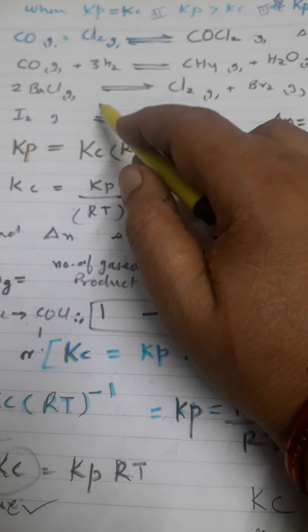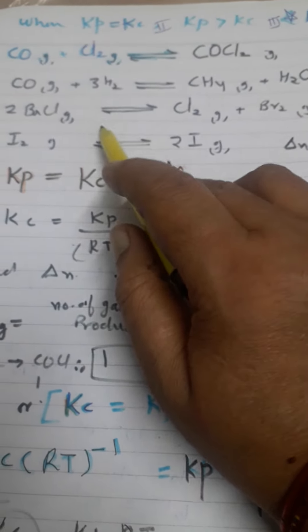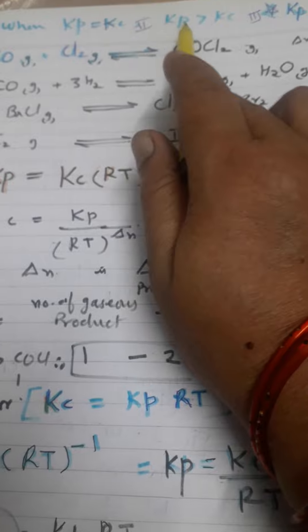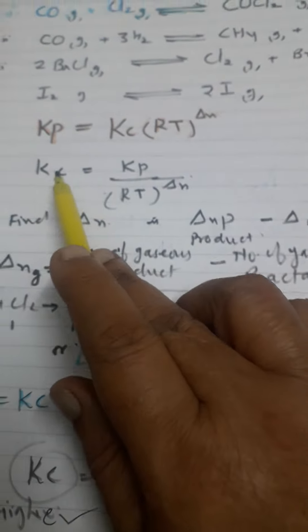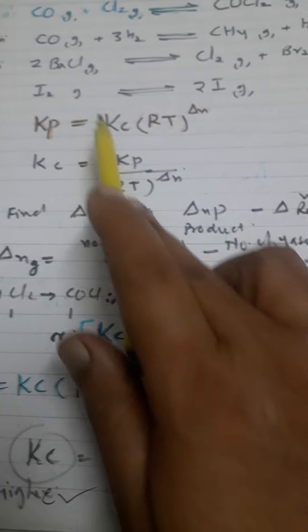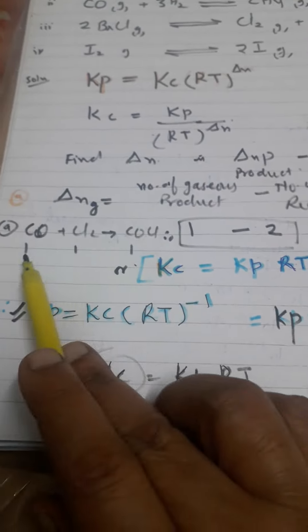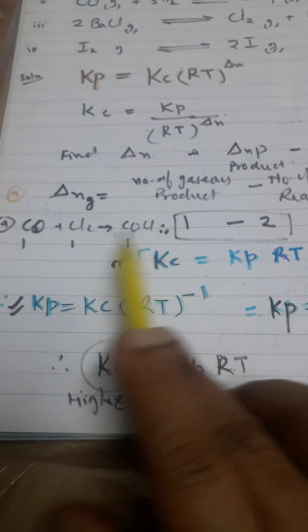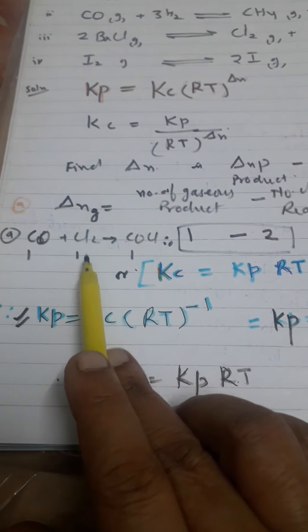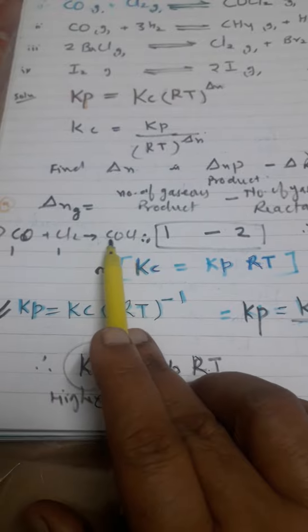Write down all four reactions — we have to find out where Kp is equal to Kc, less than Kc, or more than Kc. We use the formula Kp = Kc(RT)^ΔN, and then check the number of moles of products and reactants to find the difference ΔN.